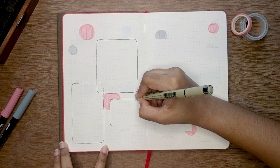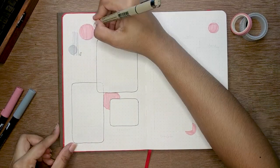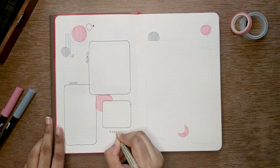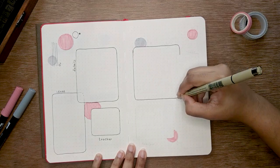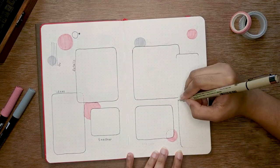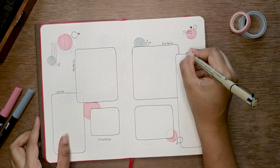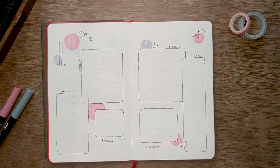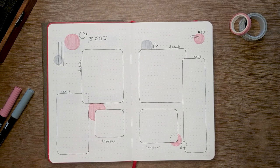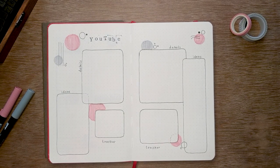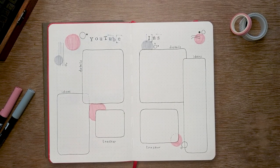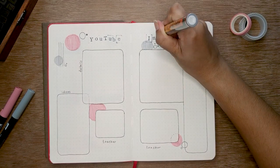My next spread is dedicated to my content on YouTube and Instagram. I always have so many ideas but forget after some times when I actually need them. So it's safe if I just add a section for my ideas and details about my contents. Also, I'm adding a small tracker on both of the pages. Both of the spreads have the same layout with the same sections.